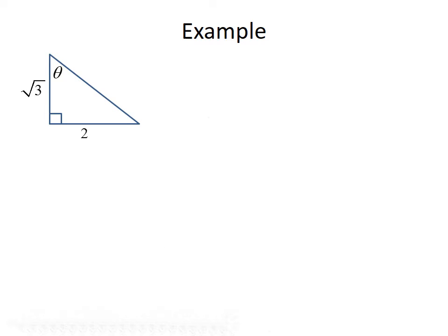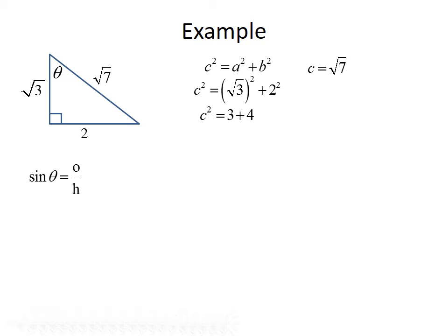Let's look at another example. This time we have a right triangle with legs of 2 and the square root of 3. Again, we start with the Pythagorean theorem to find the third side: C squared equals A squared plus B squared. So C squared equals the square root of 3 squared plus 2 squared, which gives us C squared equals 3 plus 4, which is 7. Taking the square root of both sides, the hypotenuse is the square root of 7. Now that we know all three sides, we can find our trig function values.